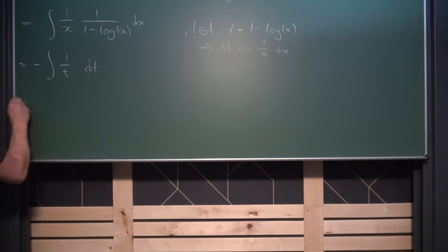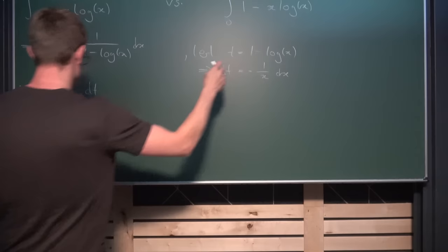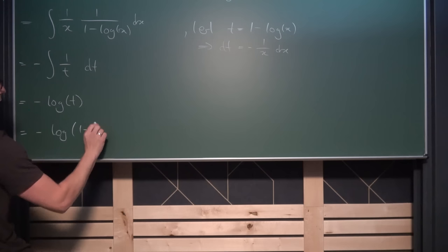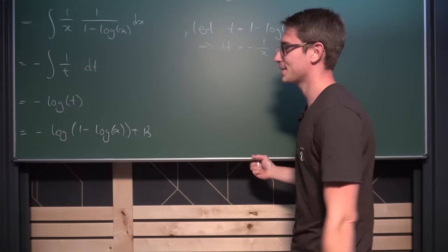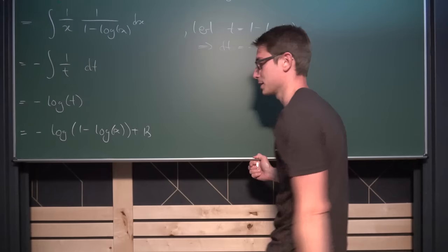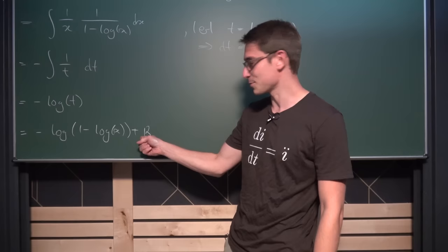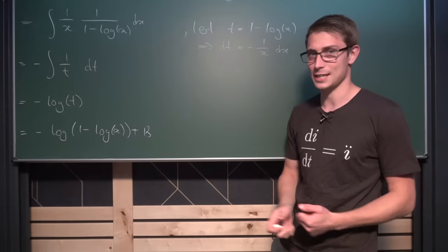This is very easy to integrate because the integral of 1 over t is the natural log of t. So this gives us negative the natural log of t. And t is nothing other than 1 minus log of x, giving us negative the natural log of 1 minus log of x plus some arbitrary constant kappa. I love to use kappa. We can also factor the negative sign inside, giving you the natural log of 1 over 1 minus log of x plus some arbitrary constant kappa.